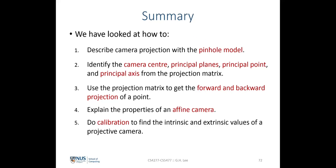In summary, today we looked at how to describe camera projection with the pinhole camera model, how to identify the camera center, principal planes, principal points, and principal axes from the projection matrix, and how to use it for forward and backward projection. We examined properties of the affine camera, then covered Zhang Zhengyou's calibration technique for finding intrinsic and extrinsic parameters, and finally modeled radial and tangential distortion, finding their parameters and undoing the distortion effect.